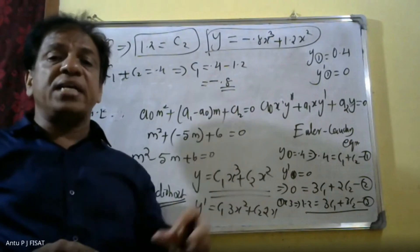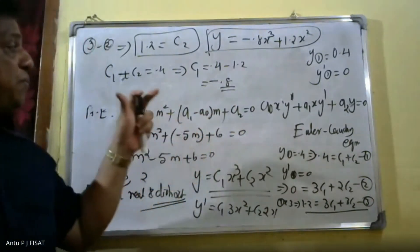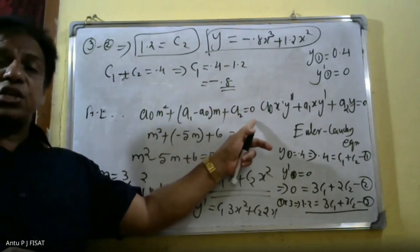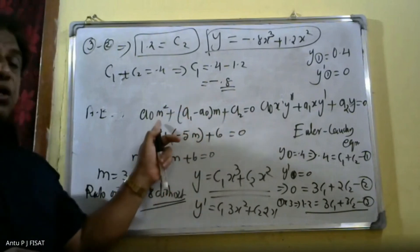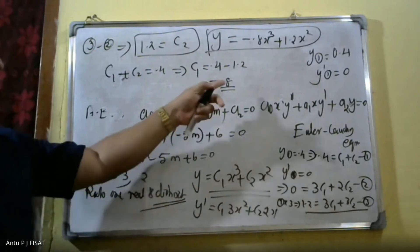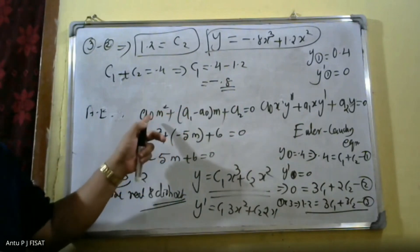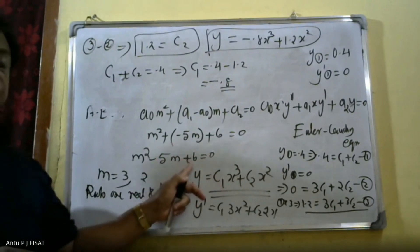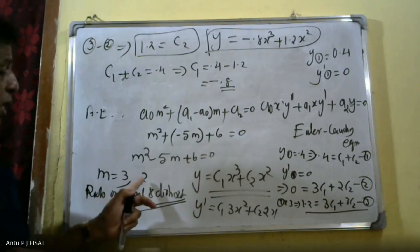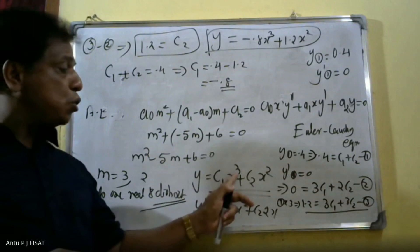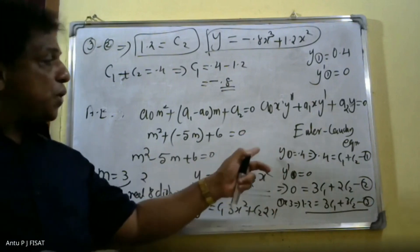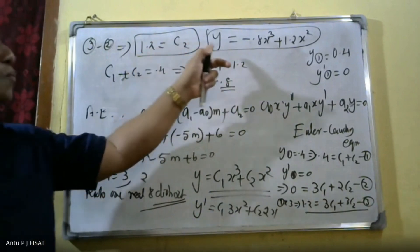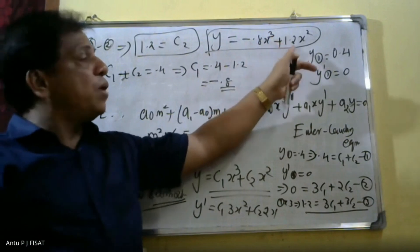This is the procedure to find the solution of Euler-Cauchy equations. We should remember the auxiliary equation: a₀m² + (a₁ − a₀)m + a₂ = 0. Substituting a₀ = 1, a₁ = −4, a₂ = 6 gives m² − 5m + 6 = 0, with roots m = 3 and m = 2. Since the roots are real and distinct, y = c₁x³ + c₂x². Applying initial conditions gives c₁ = −0.8 and c₂ = 1.2, so the final answer is y = −0.8x³ + 1.2x².